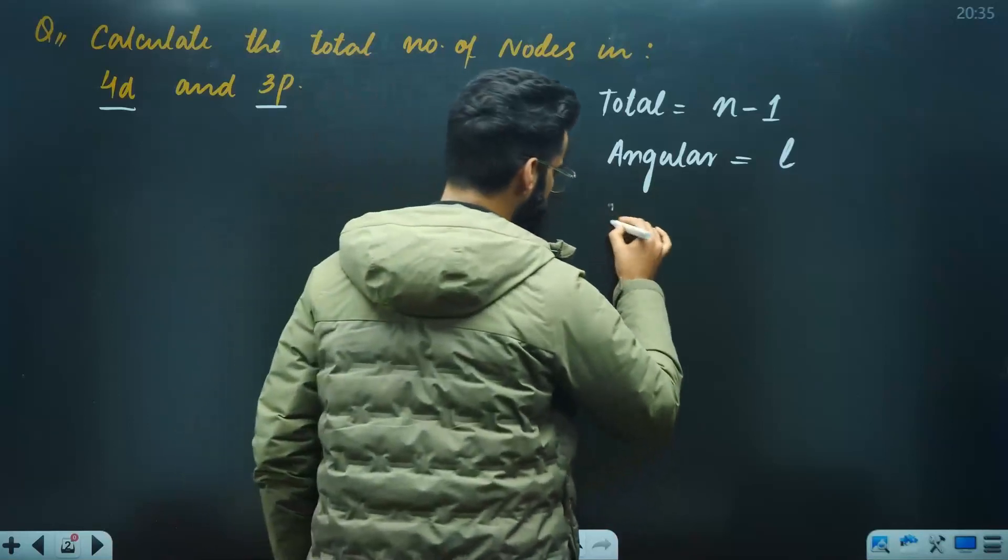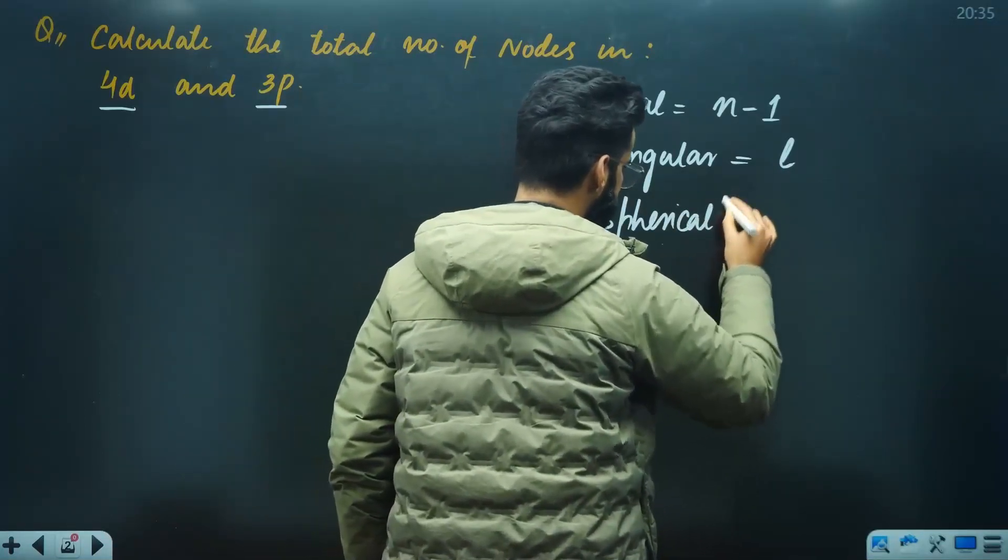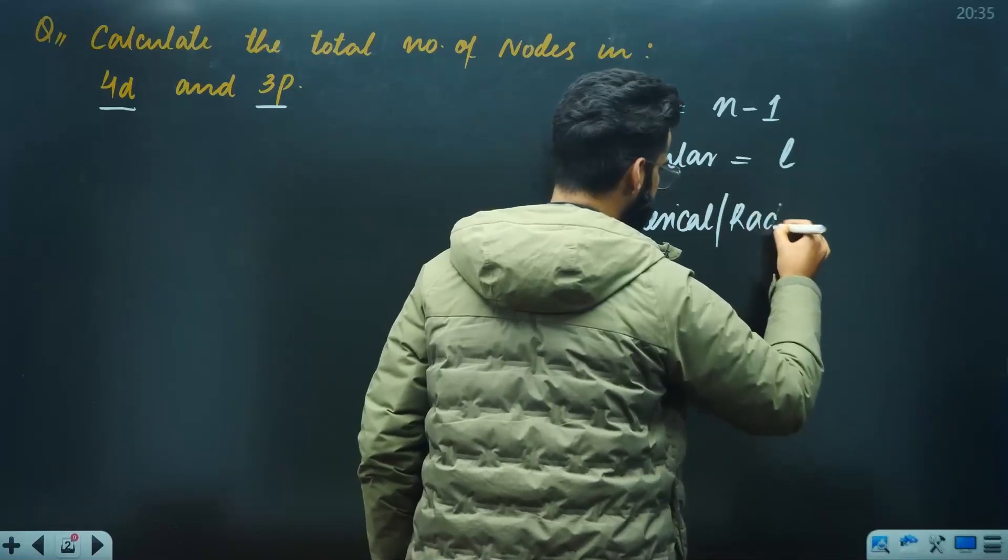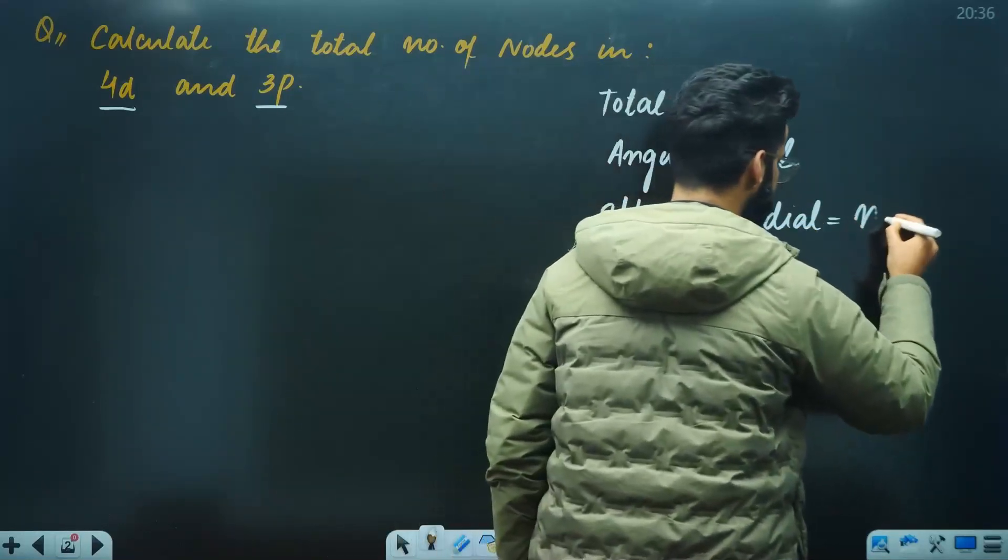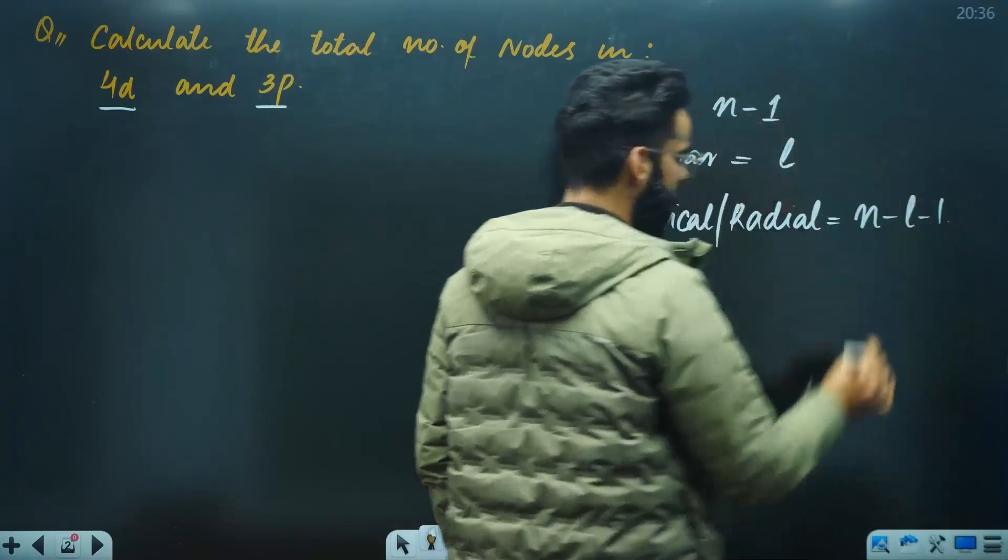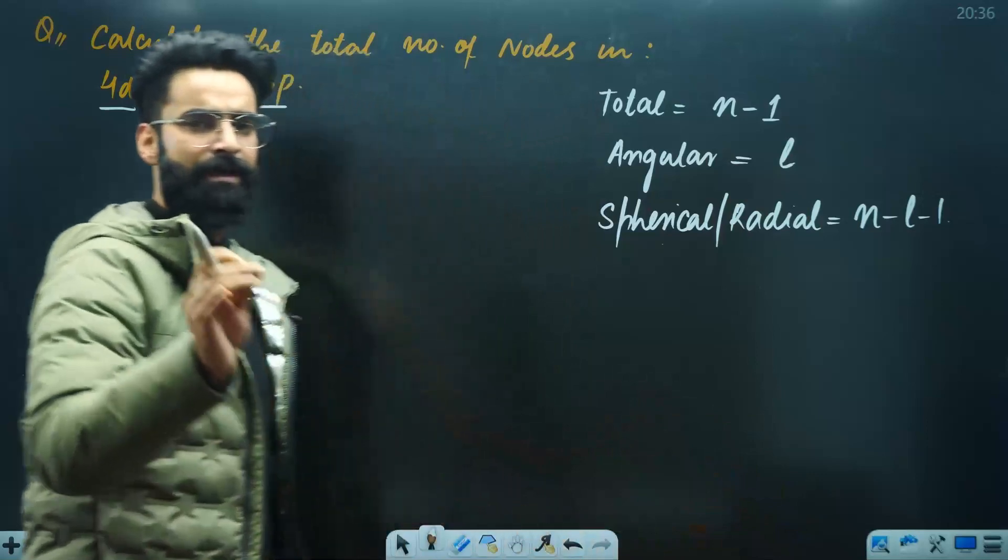Similarly, if you're asked the spherical or radial nodes, the formula is n-L-1. N is the principal quantum number, L is the azimuthal quantum number. Right? Now let's check.